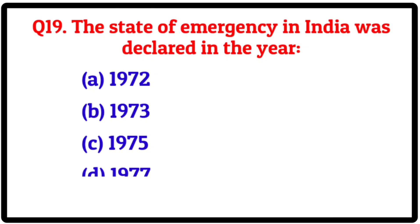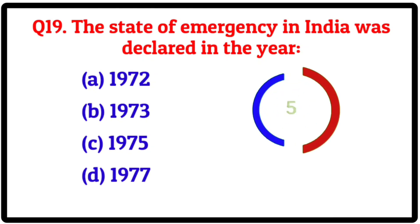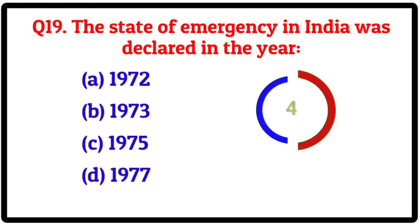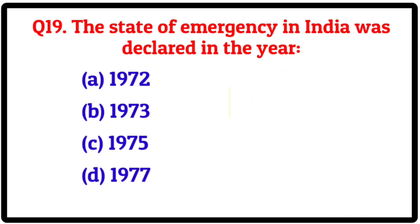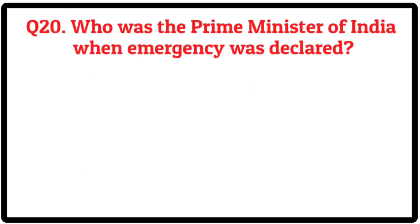Question 19 (implied). Answer: 1975. Question 20. Who was the Prime Minister of India when emergency was declared?